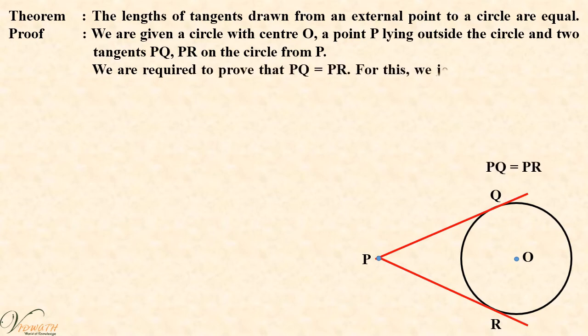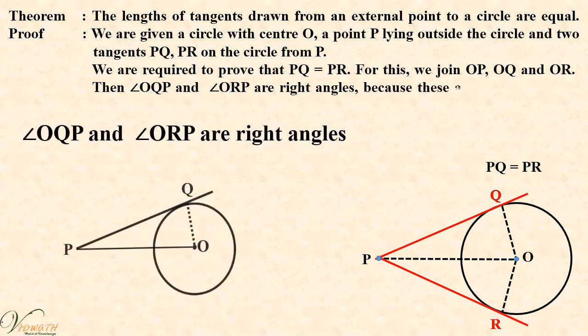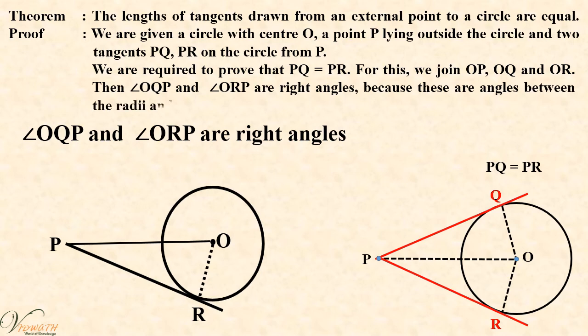For this, we join OP, OQ and OR. Then, angle OQP and angle ORP are right angles because these are angles between the radii and tangents.